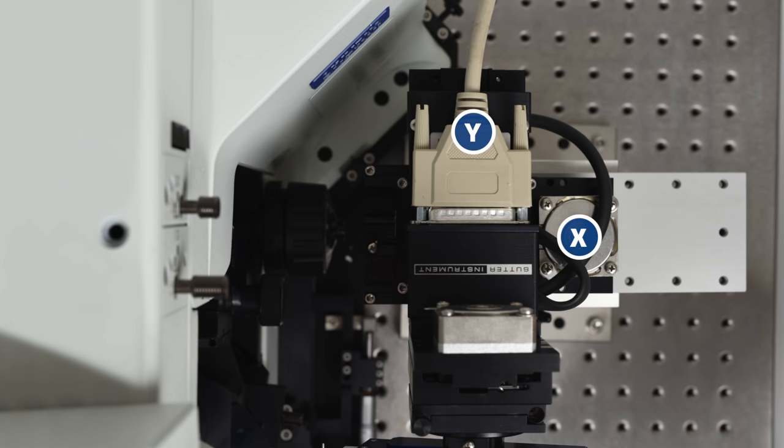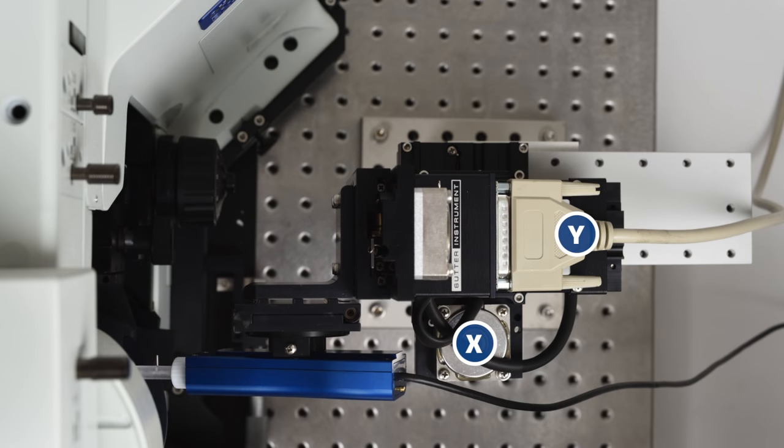By installing the right angle adapter, we have turned the manipulator 90 degrees. The X axis now behaves like the Y axis, moving forward to back, and the Y axis behaves like the X, moving from side to side.